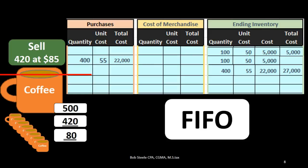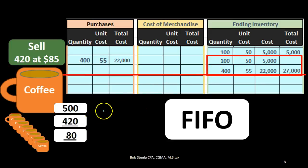Going to the worksheet, we have two layers: 100 units at $50 and 400 units at $55. We sold 420 units, so under FIFO we sold the old ones first. We wipe out the entire first layer — 100 units at $50 gives us $5,000. We still need 320 more units from the second layer (420 minus 100). Those 320 units at $55 gives us $17,600. So $5,000 plus $17,600 gives us a cost of goods sold of $22,600.